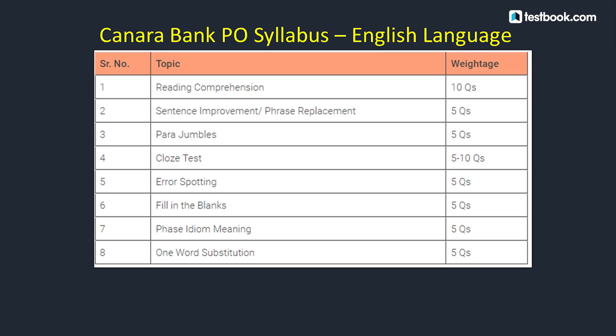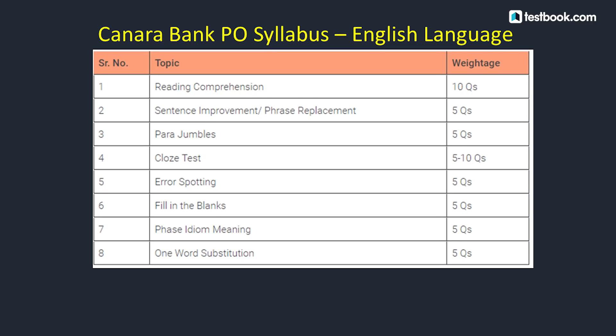For Para-Jumbles, you will be given a set of 5-6 sentences and asked to arrange them into a meaningful paragraph. For Cloze Test, 5-10 questions with a single passage containing 5-10 blanks to fill using grammatical rules. Error Spotting: 5 questions. Fill in the Blanks: 5 questions. Phrase and Idiom Meaning: 5 questions. One Word Substitution: 5 questions.